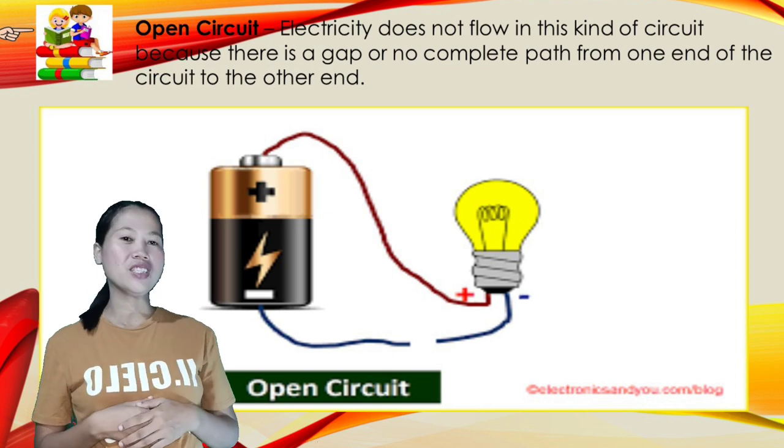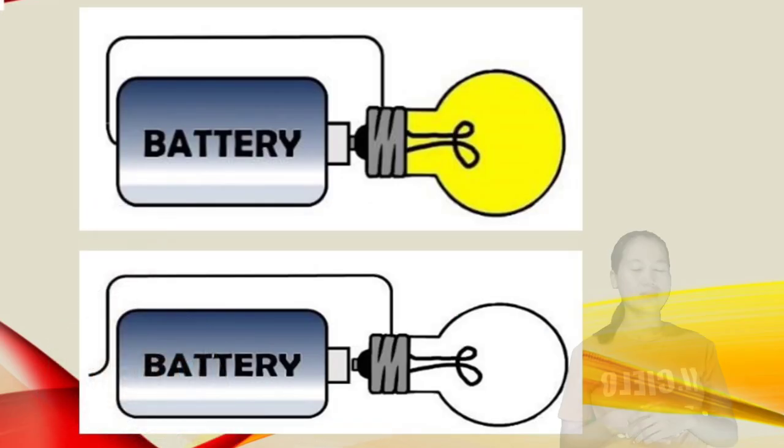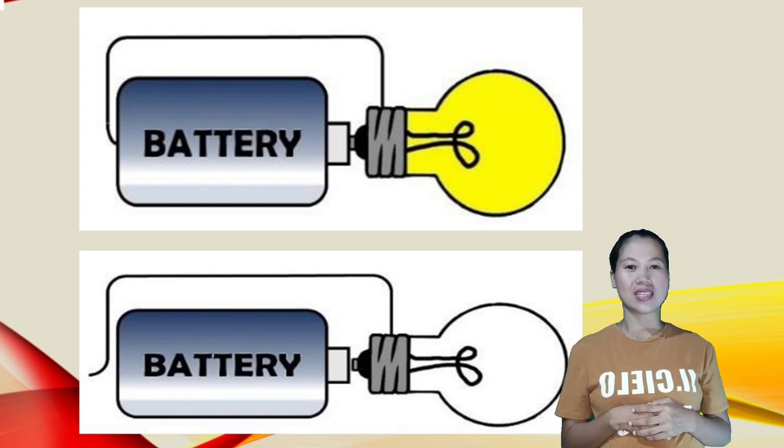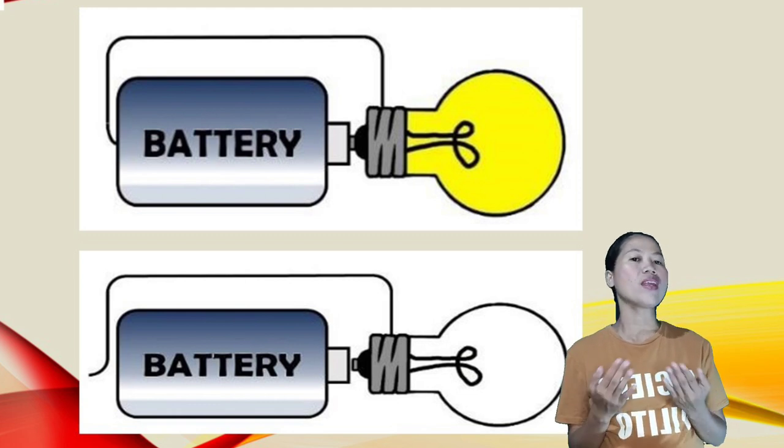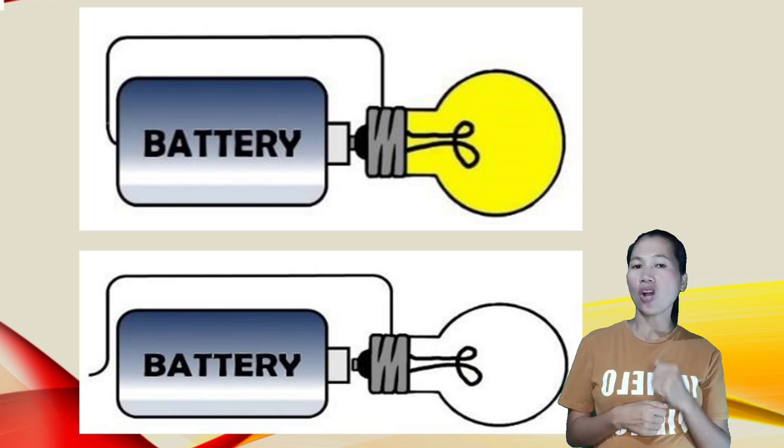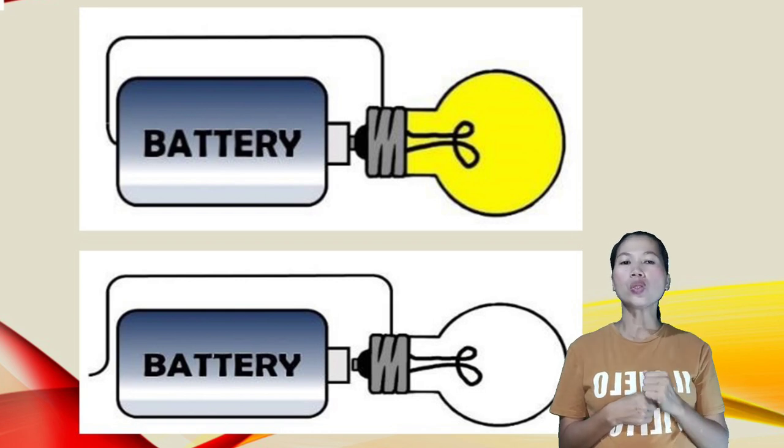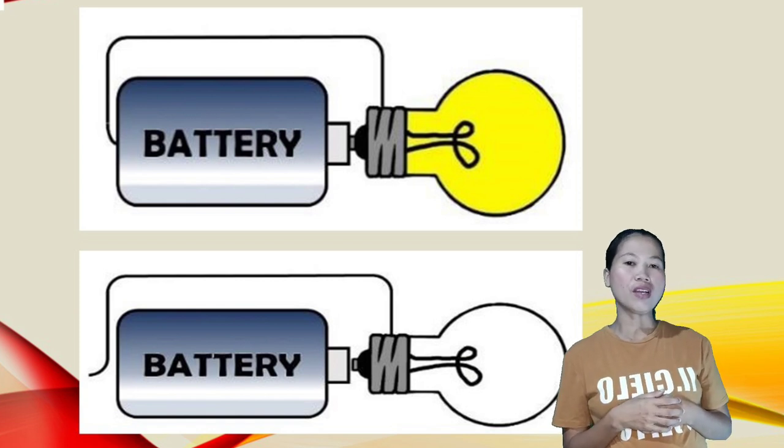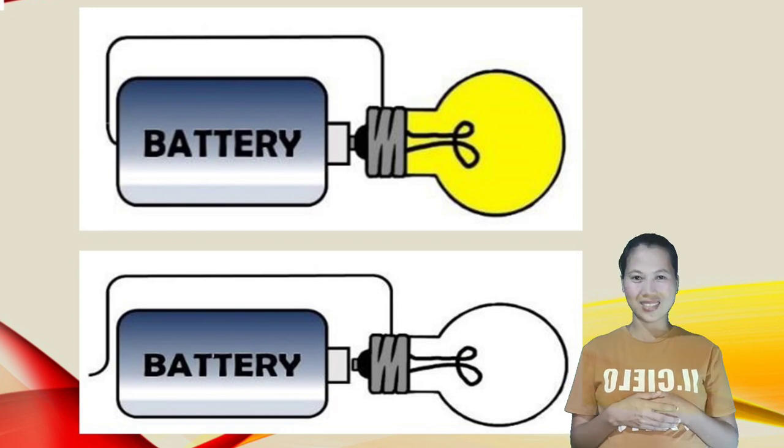How will you differentiate open from closed circuit? An open circuit is a circuit that does not allow the electricity to flow from one end to the other end because of a gap between the path of the electricity, while a closed circuit is a circuit that allows electricity to freely move from one end of the circuit to the other end.